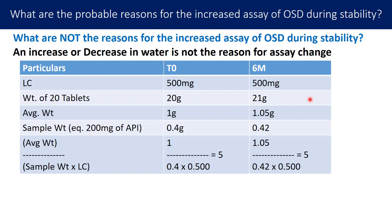Here is the example. Two stability time points are considered: T0 (initial) and six months. The label claim of the product is 500 mg. The weight of 20 tablets at T0 is 20 grams, and at six months is 21 grams. This one gram increase in the weight of 20 tablets is due to increased water content.